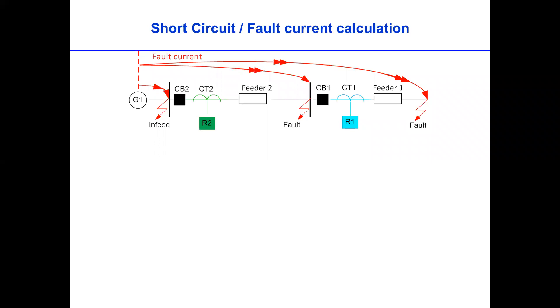The first thing we need to do in protection is calculate the fault current, because that fault current will determine the setting of the current. For example, we have three faults at each busbar.